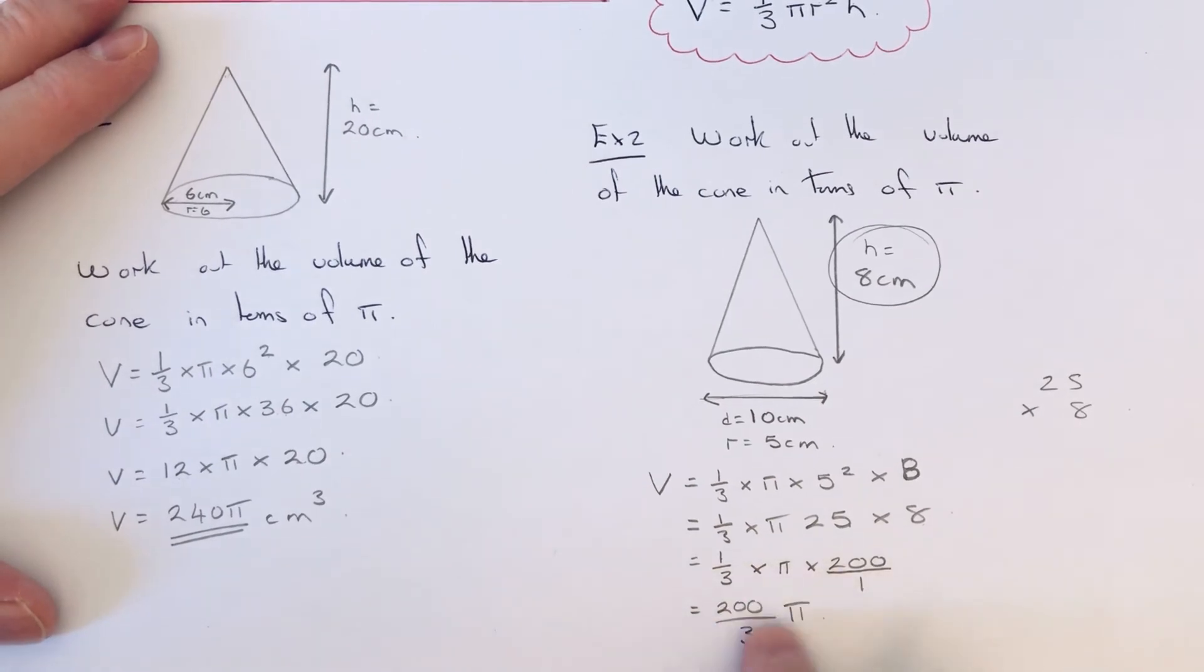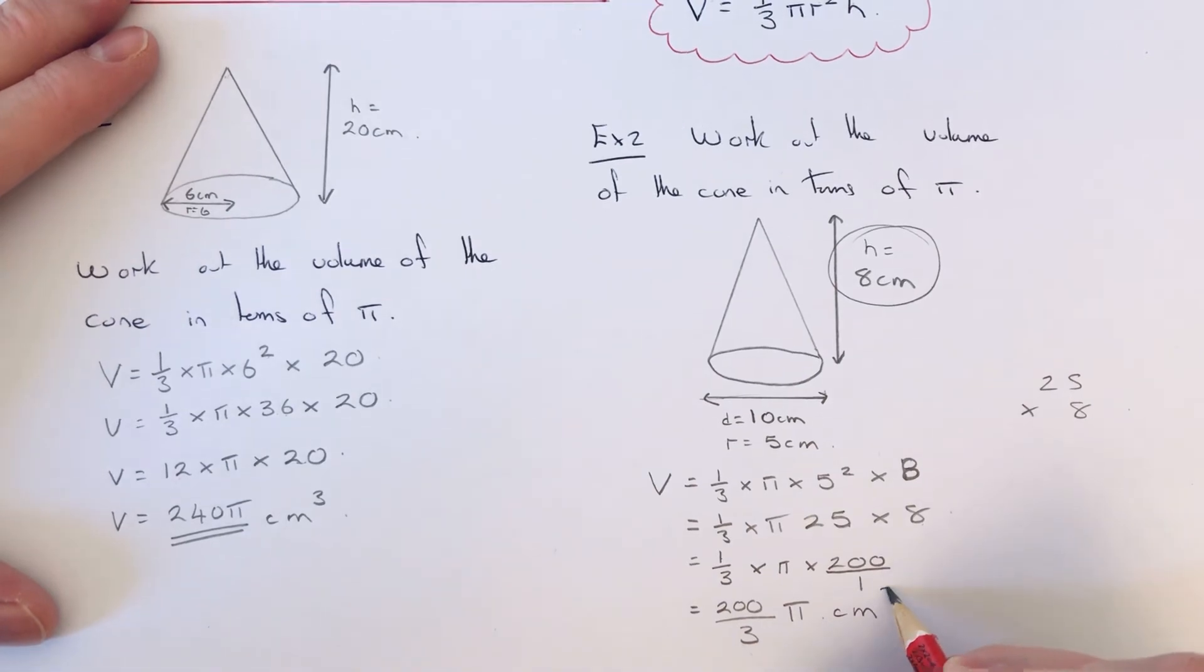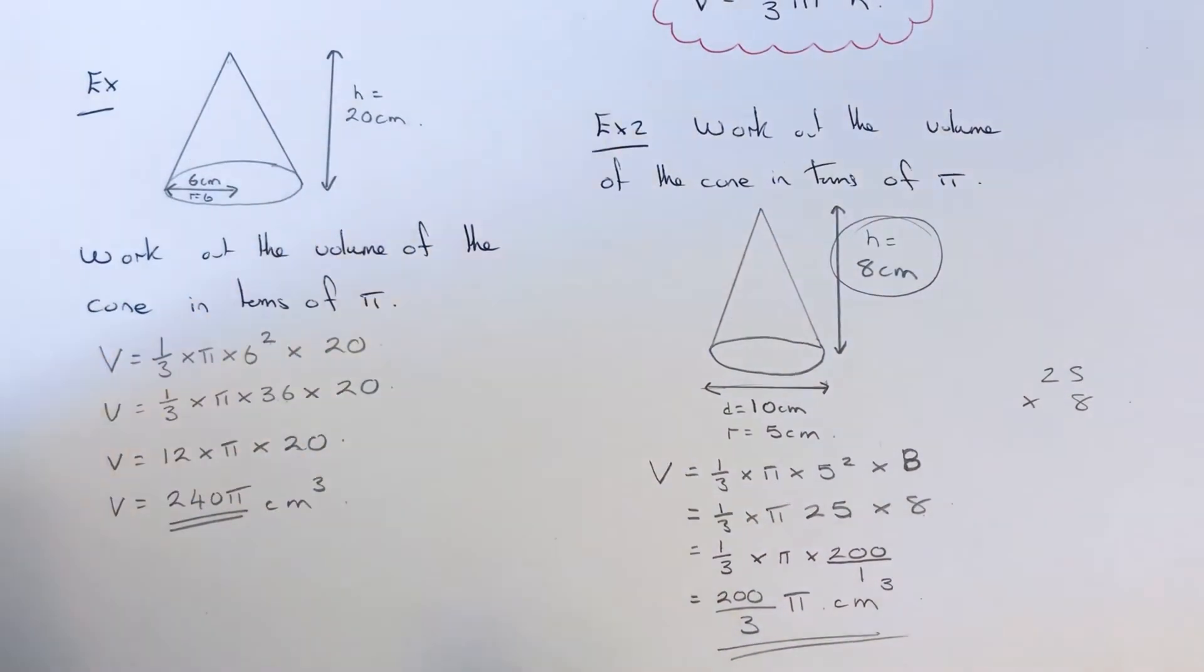This fraction doesn't simplify, so it's fine leaving it as an improper fraction. Our final answer is 200 over 3 pi centimeters cubed.